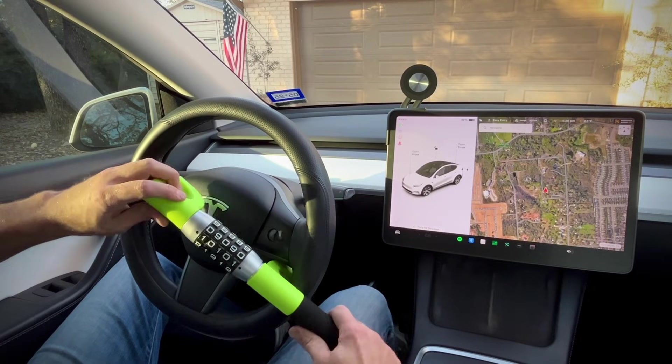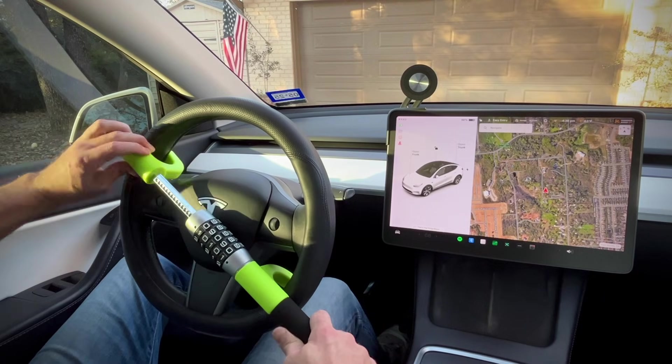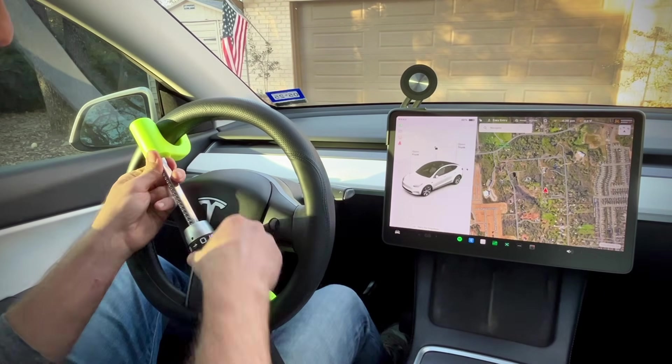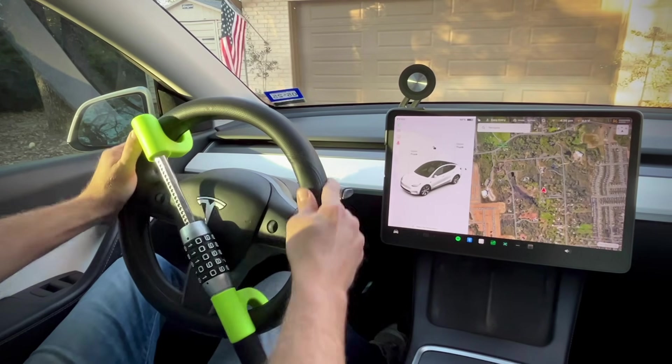Let's go out to the Tesla and put it on the steering wheel. Check this out. I'm going to put it in both sides, get it tight, spin the numbers and look at this. Bam. That is locked in there tight.